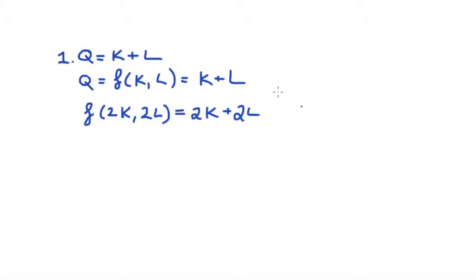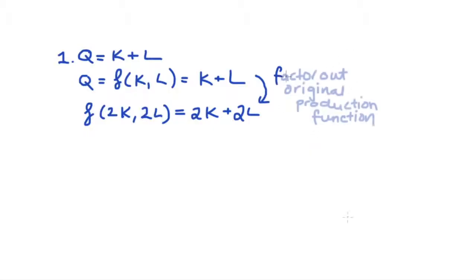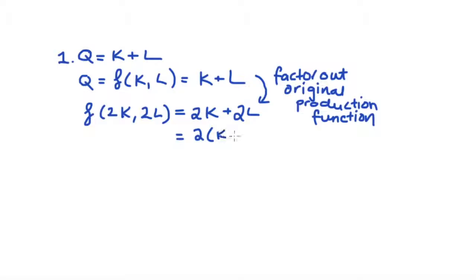The production function evaluated with double each input is equal to two K plus two L. Now we want to find out how much our original output has increased by given these increases in our inputs. My original output Q was just equal to K plus L. My strategy — and this is the general strategy — is to try to factor out that exact expression from our revised function. With this function, if I factor out two, I get two times K plus L. Now K plus L was just equal to our original function, which was equal to Q, so I can get two times Q.